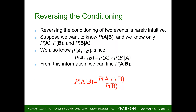Reversing the conditioning: reversing conditioning for two events is rarely intuitive. Suppose we want to know the probability of A given B, and we know only the probability of A, the probability of B, and the probability of B given A. Basically, we use the formulas we know to reverse-engineer the probabilities we need. We need P(A and B) over P(B), and since P(A and B) equals P(A) times P(B|A), we can substitute in and solve.